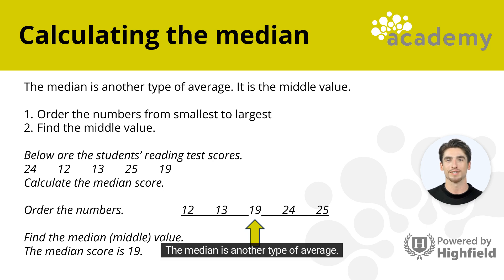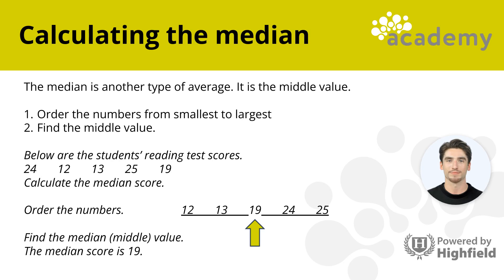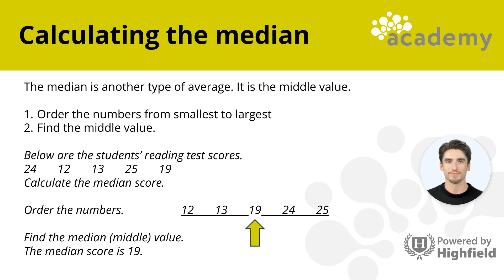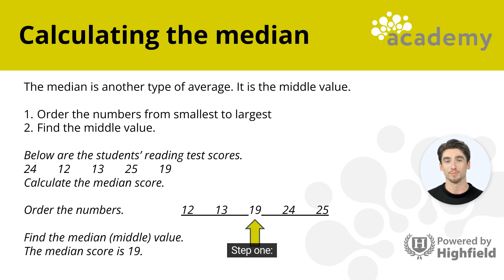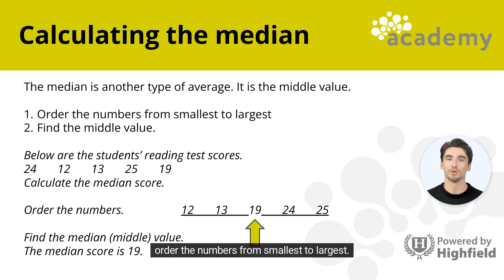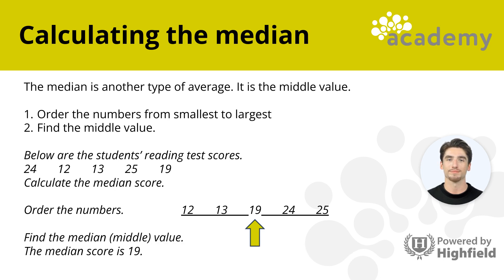The median is another type of average — it is the middle value. The median is calculated in two steps. Step 1: order the numbers from smallest to largest. Step 2: find the middle value.